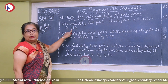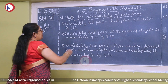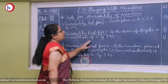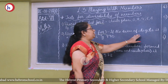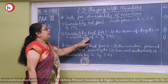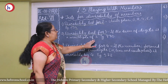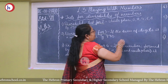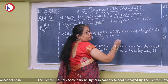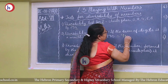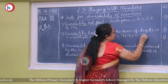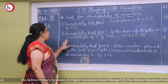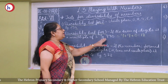Next, the divisibility test for 3: if the sum of the digits is a multiple of 3, then the number is divisible by 3. For example, 990: 9 + 9 + 0 = 18, and 18 is a multiple of 3, so 990 is divisible by 3.